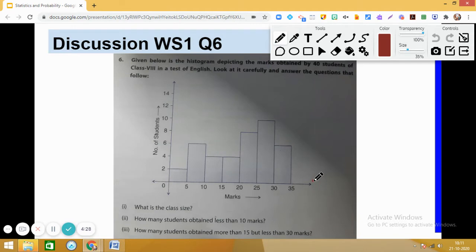You can see that on the x-axis marks are plotted and on the y-axis the number of students is given. On the x-axis, marks are plotted with class intervals starting from 0 to 5,